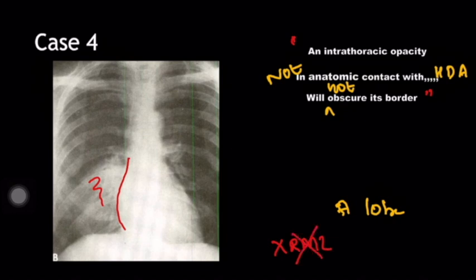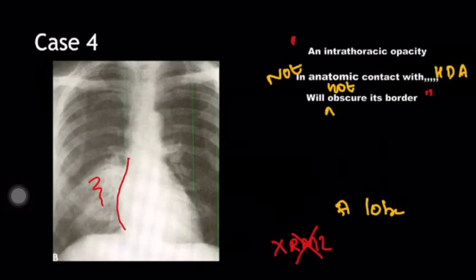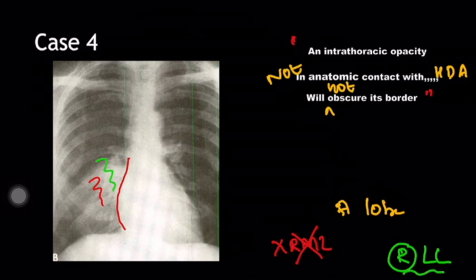Going back to the segmental anatomy, the diaphragm is in contact with the basal segments of both lower lobes. But there is also a superior segment of the lower lobe that is not in contact with the diaphragm. Going by the segmental anatomy, this lesion could likely be in the right lower lobe — to be specific, the superior segment. So you can definitely rule out its location being the right middle lobe.